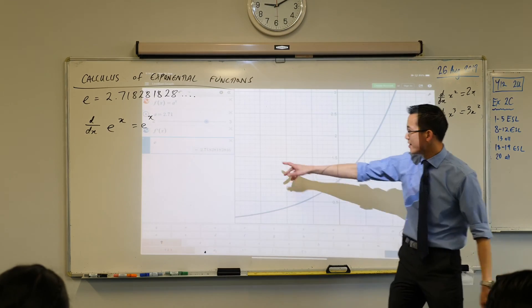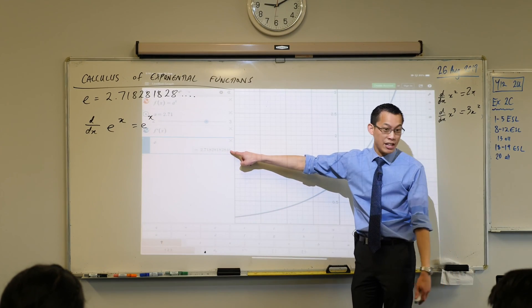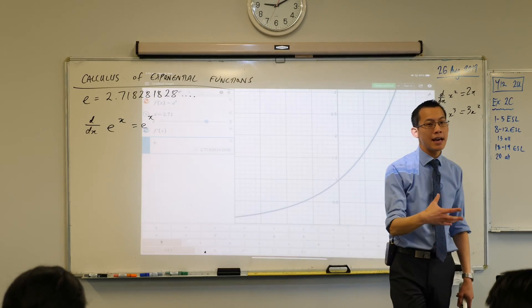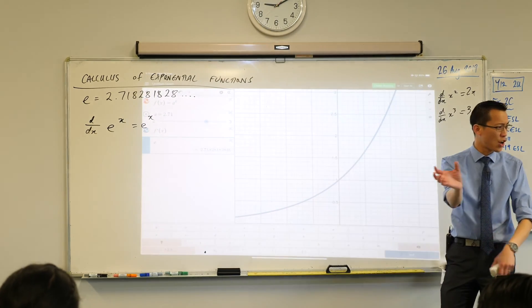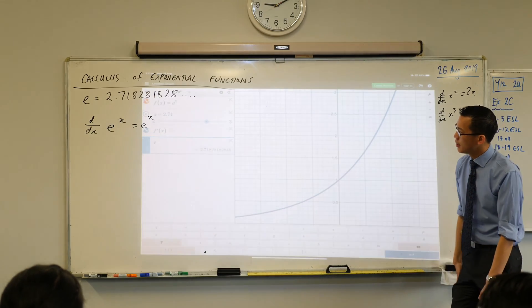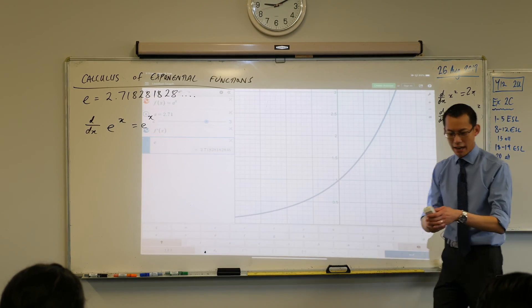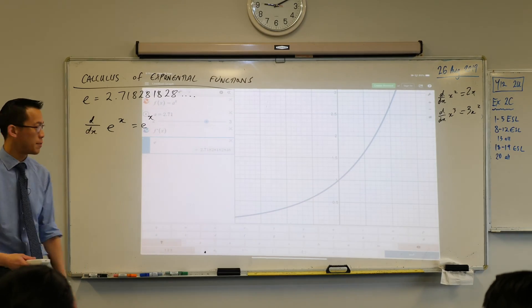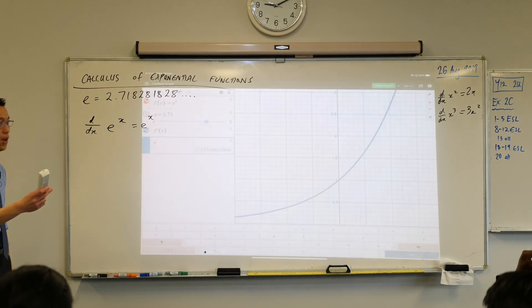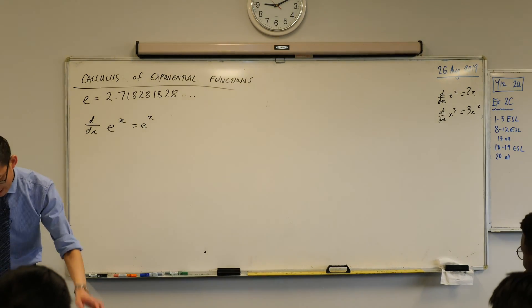This number E, just type in E and it'll give it to you. This number E is a bit like the number pi. Pi is decimal places, they keep on going and changing forever and ever and ever. E is actually a special category of number called a transcendental number, which makes it really super special.